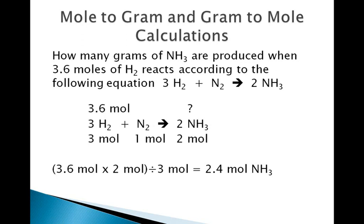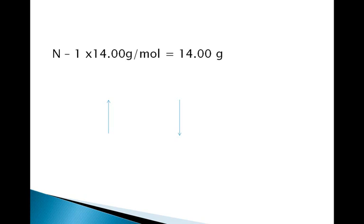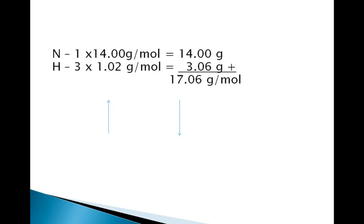Now that we have the quantity of NH3 in moles, we will perform a second part and convert it to grams. We can now ignore all of the equations and the calculations we did in the previous slide and just use skills we learned in a previous video to convert moles to grams. We will first find the mass of 1 mole of NH3. NH3 contains 1 N which has a mass of 14 grams per mole, giving us 14. There are 3 H's, each having a mass of 1.02 grams per mole — 3 times 1.02 gives us 3.06 grams. When we add those up, we get 17.06 grams per mole.